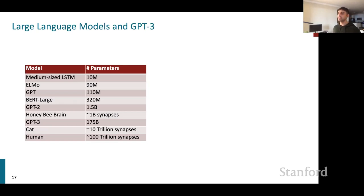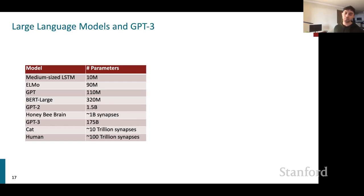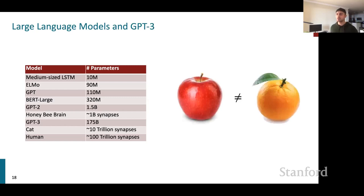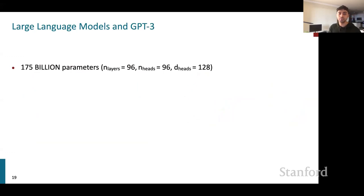We have a collection of models ranging from medium-sized LSTMs — a staple in pre-2016 NLP — all the way to humans with 100 trillion synapses. GPT-2 has over a billion parameters and GPT-3 has over 150 billion parameters, exceeding the number of synaptic connections in a honeybee brain. The scale of these models is reaching astronomical numbers. GPT-3 is a large transformer with 96 layers.